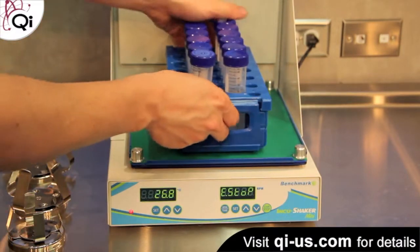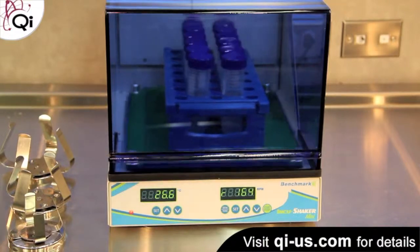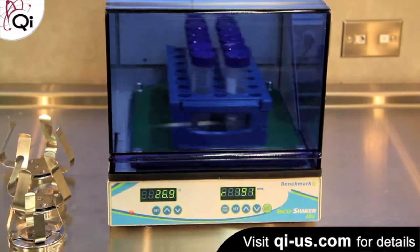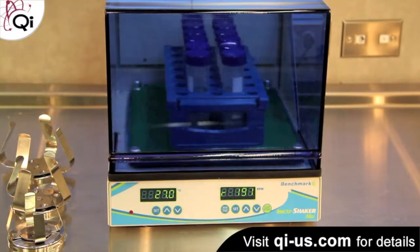The clamps can be quickly replaced. Here we replaced three flask clamps with a holder for 50 mil tubes, and as you can see it's a very quick and easy process.